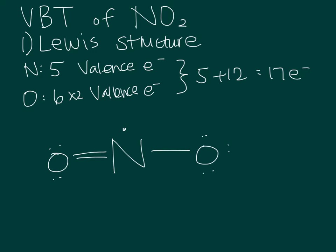To begin the Lewis structure, we have to first know the valence electrons and the total number of electrons involved to make our skeletal structure. Nitrogen has five valence electrons, oxygen has six valence electrons. We have two oxygens in the NO2 molecule, so that's 12 electrons from the oxygens, and then we add five, giving us 17 electrons total.